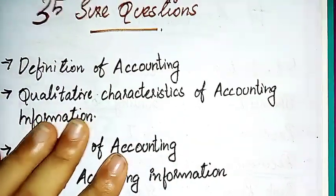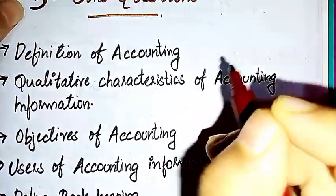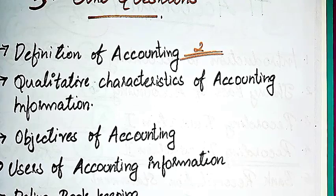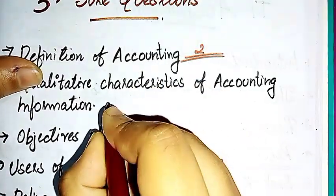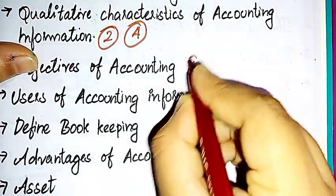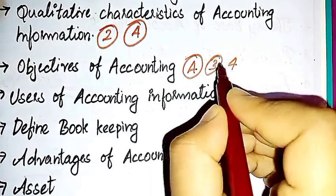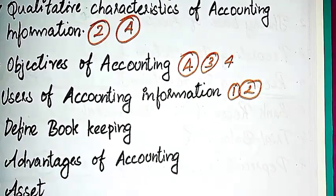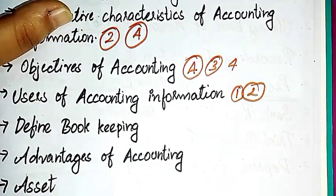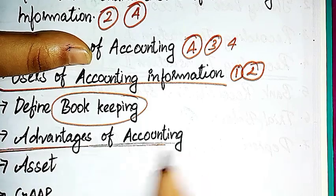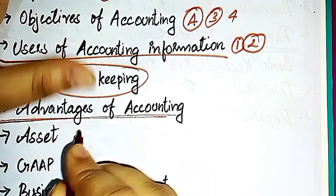First question is define accounting. If you have two marks, study the definition. Then quality characteristics of accounting information. If you have two marks, study four marks' worth. Then objectives of accounting. If you have three marks, you can study four marks. Then there are internal and external users. Define bookkeeping, then advantages of accounting.